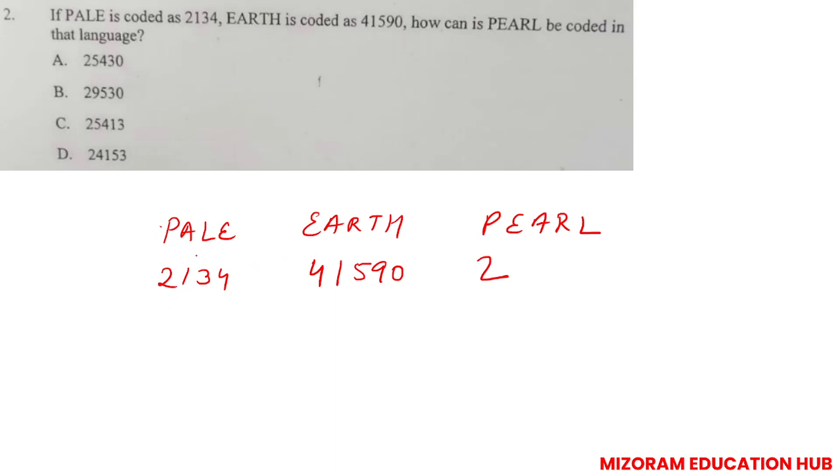PEARL - P is 2, E is 4, A is 1, R is 5, L is 3. So 2, 4, 1, 5, 3. Option D is correct.